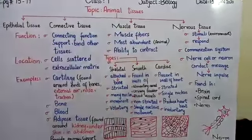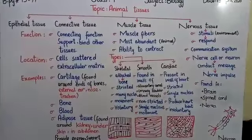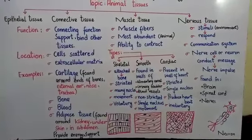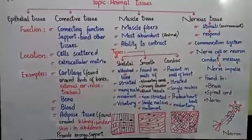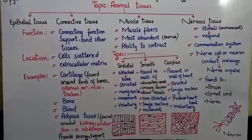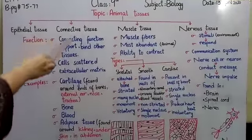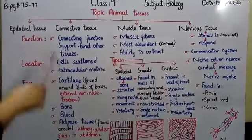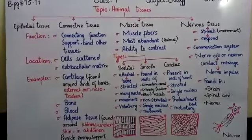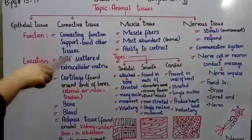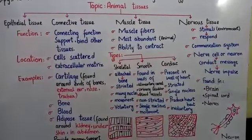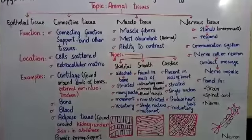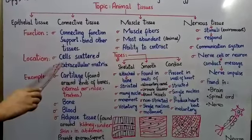First, let's discuss connective tissue. The basic function of connective tissue in your body is that it plays a connecting role. As the name shows, connective tissue serves as a connecting function — it supports and binds the other tissues. It provides support to different organs and plays a role in binding them together.